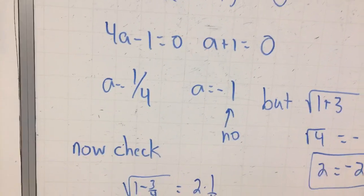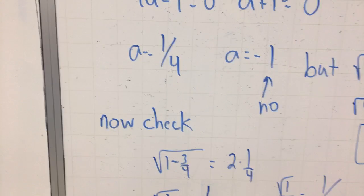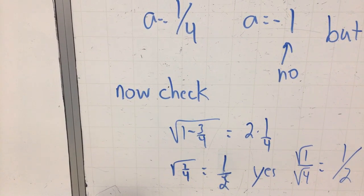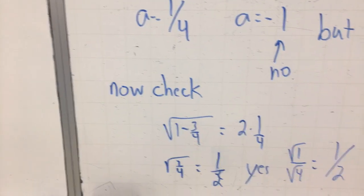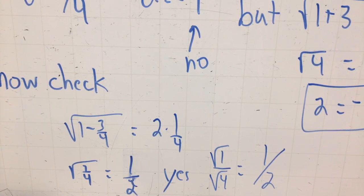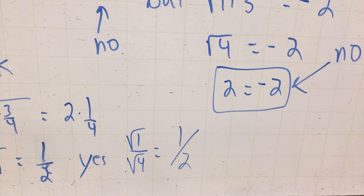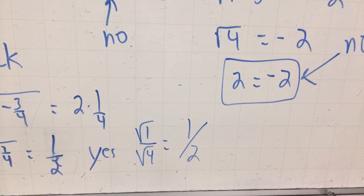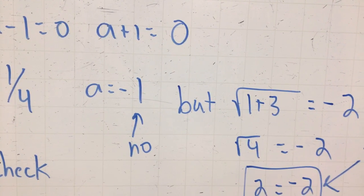Now, let's look at the 1 quarter part. 1 quarter. Check. 1 minus 3 quarters. That's a quarter. The square root of quarter. Remember, it's the square root of 1 over the square root of 4. So, 1 half. Now, what's 2 times a quarter? 1 half. So, that works. The quarter works, but the negative 1 does not work.